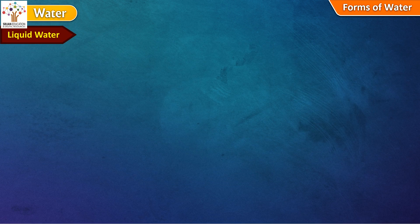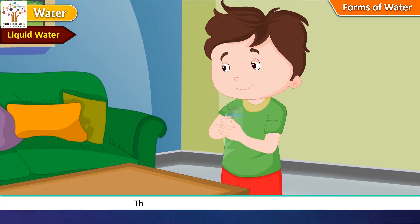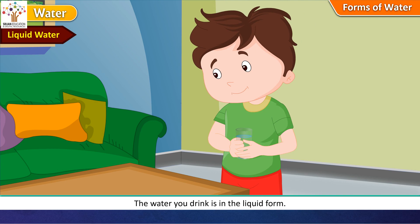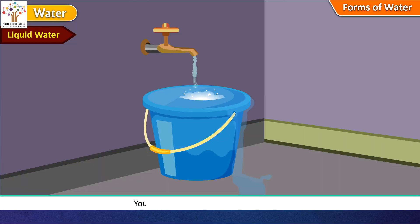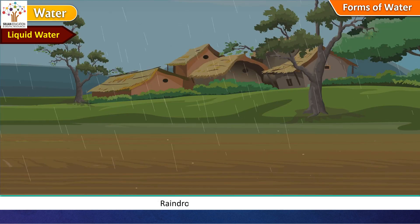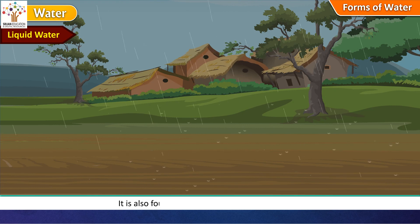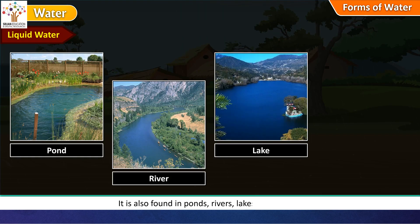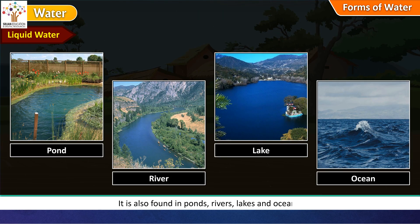Liquid water. The water you drink is in the liquid form. Liquid water is found in many places. You see liquid water coming out of a tap. Raindrops are liquid water. It is also found in ponds, rivers, lakes and oceans.